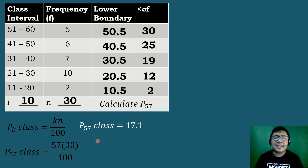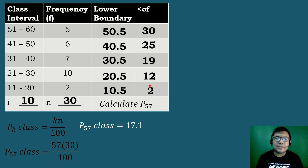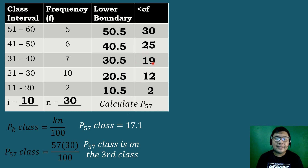To get the percentile class, we look at the less than cumulative frequency. The value must be greater than or equal to 17.1. So 2 is less than 17.1 — not the percentile class. 12 is also less — not the percentile class. Then 19 is greater than 17.1, so our percentile class is located at the third class.